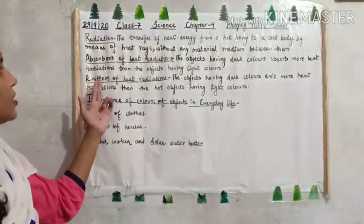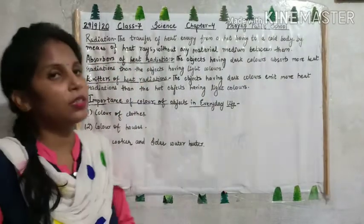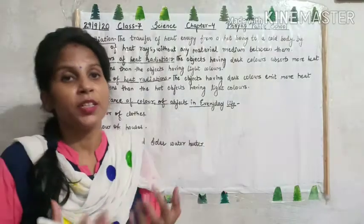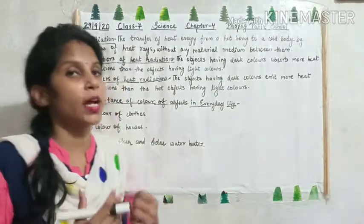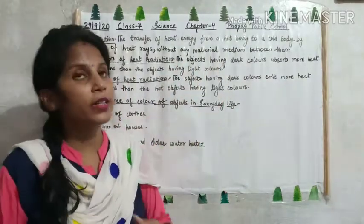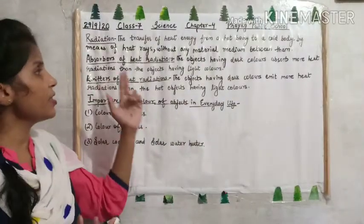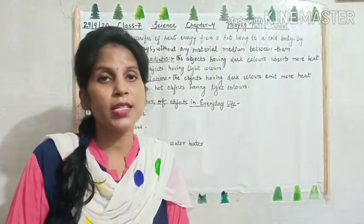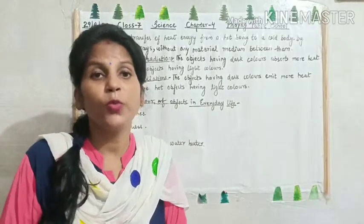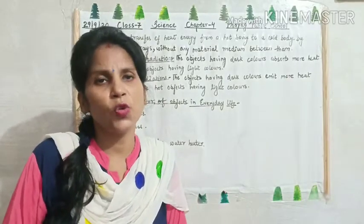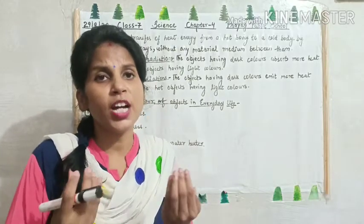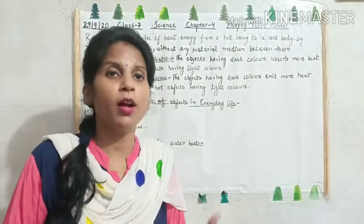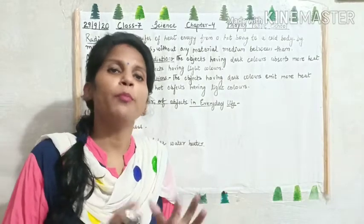Now, absorbers of heat radiation. Which substances absorb heat very well? The objects having dark colors absorb more heat radiation than the objects having light colors. For example, in winter season we wear dark colored clothes, usually black clothes. They absorb more heat and the body or object stays warm.